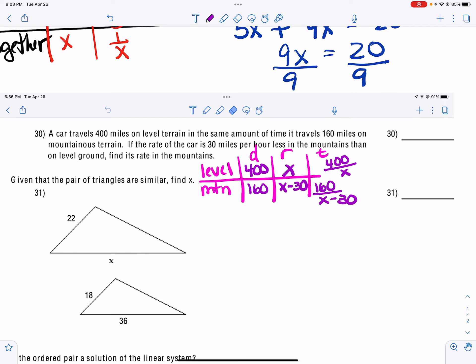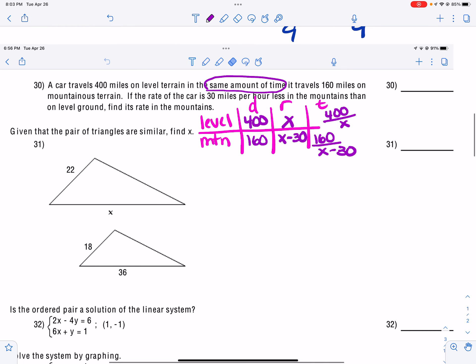Now, it says the rate of the car is 30 miles less in the mountains than on level. So that means that level is going to be my X and the mountains is going to be X minus 30. And so once I get my distance and my rate, my time is always going to be my distance divided by my rate.